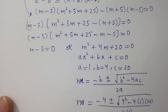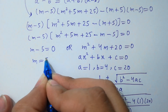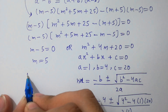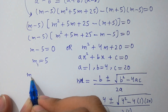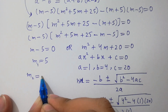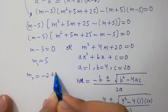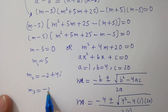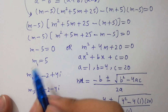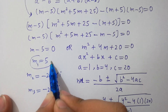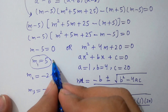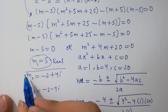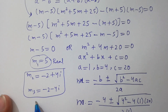So M1 equals 5, M2 equals minus 2 plus 4i, and M3 equals minus 2 minus 4i. M1 equals 5 is the real solution, and M2 and M3 are complex solutions.